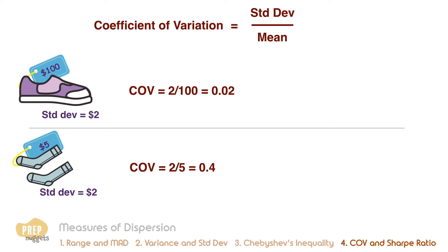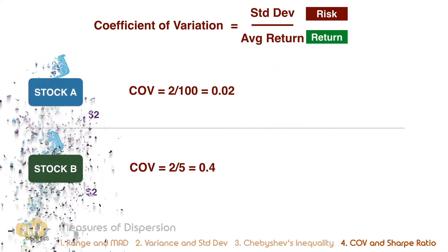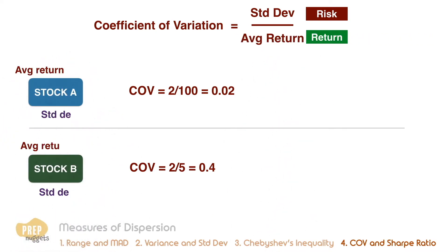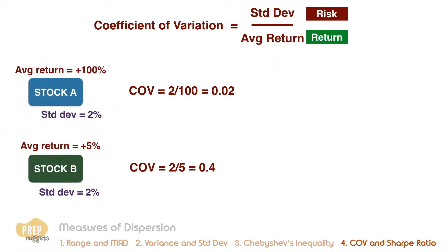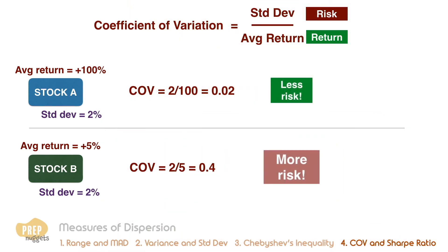In evaluating returns, deviation is associated with risk and the mean is the expected return. So the coefficient of variation can be a measure of the risk per unit of return. Replacing the shoes example with a comparison of the returns of stock A versus stock B, stock B is deemed more risky than stock A as it has a higher coefficient of variation. Even though both have the same standard deviation, the relative risk level of each stock can be vastly different.